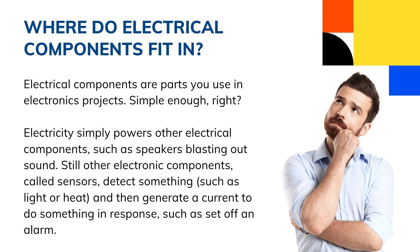Electrical components are parts used in electronic projects. Some electrical components control the flow of electricity, such as a dimmer switch that adjusts the brightness of a light. Electricity simply powers other components such as speakers. Other electronic components called sensors detect something such as light or heat and then generate a current to do something in response, such as setting an alarm off.